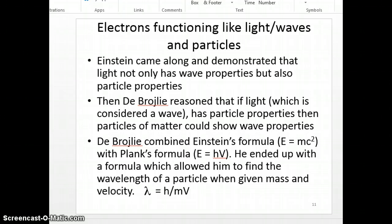Well, de Broglie said then, if light has particle properties, then particles should have wave properties. So de Broglie combined Einstein's formula, E equals mc squared. E is energy, m is mass, and particles have mass, and c is the constant. So E equals mc squared is a formula for energy of particles.